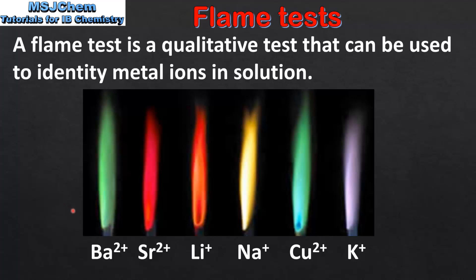As we can see, the different metal ions give different colors when heated in the flame. From left to right we have barium, strontium, lithium, sodium, copper and potassium. These colors can be used to identify the metal ions in solution.